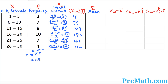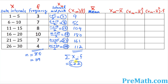Likewise, we're going to add the fourth column as well. Sigma means add them up — that is sigma of x-sub-m times f. When you add from 9 all the way to 112 using your calculator, this turns out to be 622. So keep track: the sum is 622 and n equals 39.